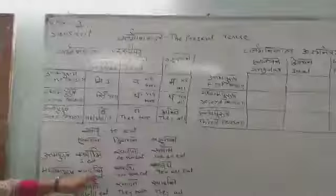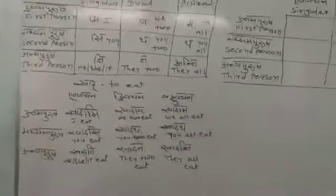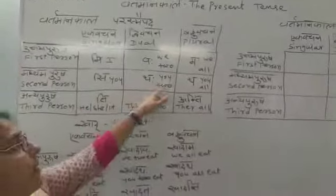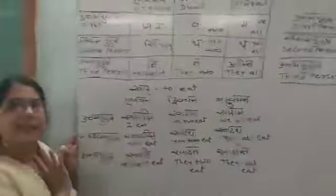Students, you do not have to remember the English translations — I wrote them only for your information. What you have to remember is: khadami, khadavah, khadamah; khadasi, khadathah, khadatha; khadati, khadatah, khadanti. If you remember the suffixes — mi, vaha, maha, si, thava, thah, ti, thah, ante — then you will be able to do all these forms. This is our Vartman Kaar Parasmaipada.